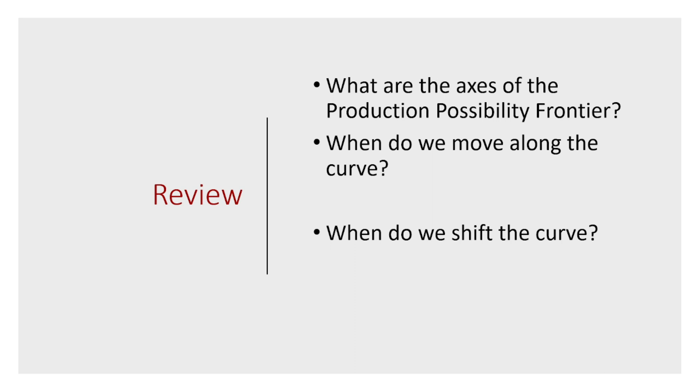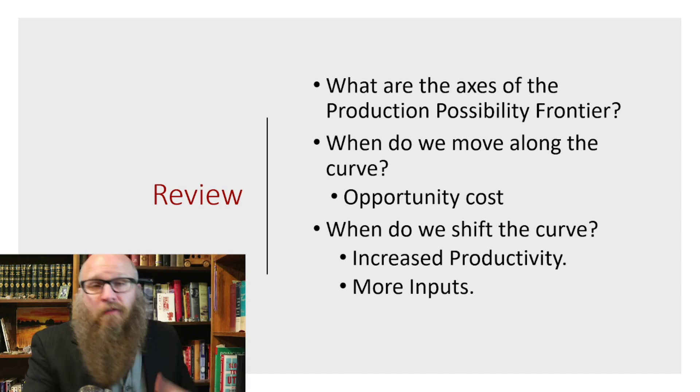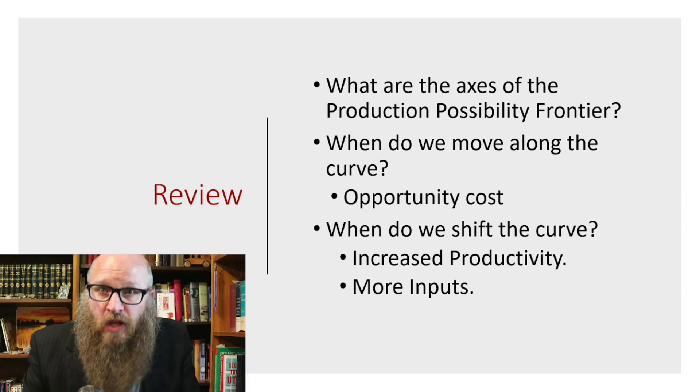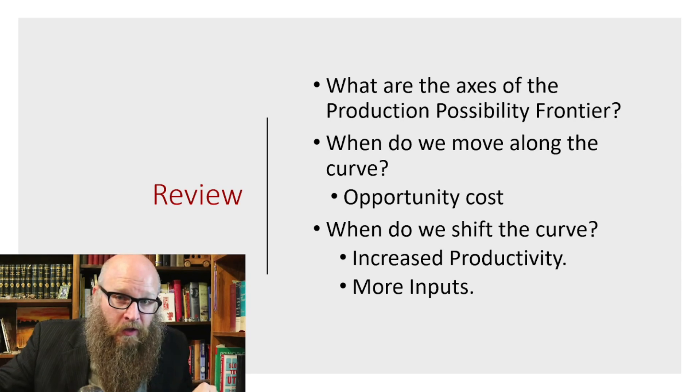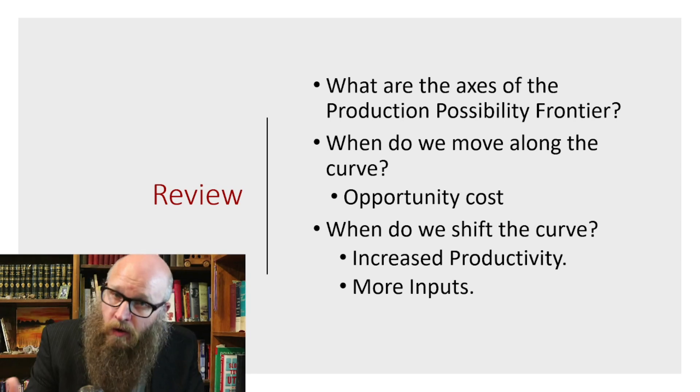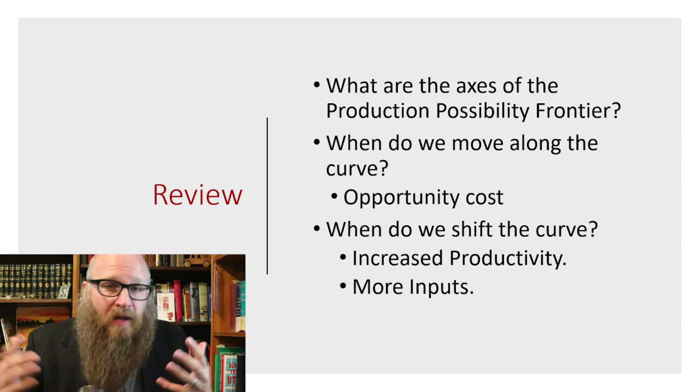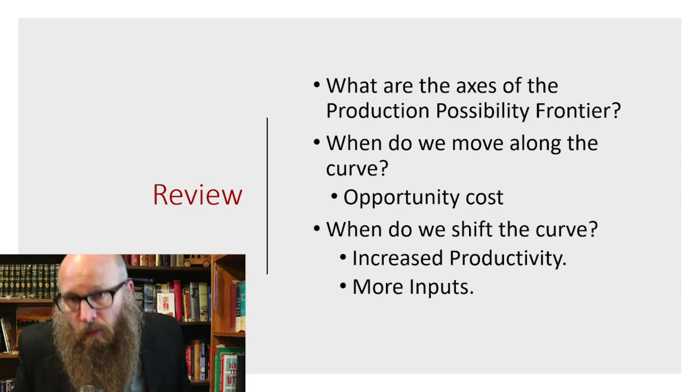So when do we move along the curve? And when do we shift the curve? We move along the curve when we're interested in the opportunity cost of producing one good versus producing another. We're staying along that curve. We're going to shift that curve anytime something changes in the economy. That's not just the choice of producing this versus producing that. Primarily in this context, it would be increasing productivity, increasing the technology, or just increasing the input, getting more labor, getting more capital, getting more workers, or getting more machines.